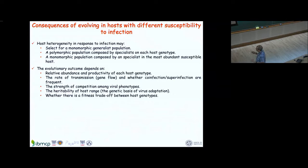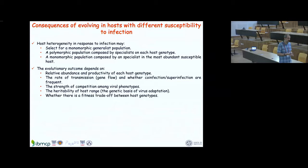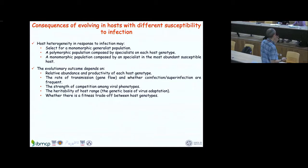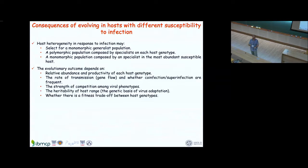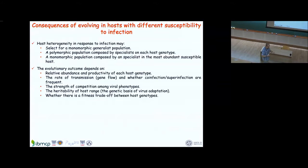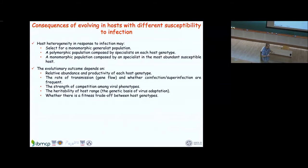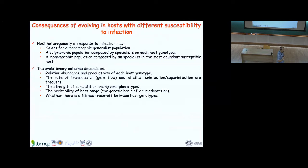The rate of transmission is also important — flu transmits easily by air or contact surfaces, while hepatitis C requires blood transmission via transfusions or shared syringes. Gene flow in the viral population and whether co-infection and super-infection are frequent also matter. Some viral genotypes may infect hosts already compromised by another viral genotype, and whether the virus produces single or multiple infections is relevant to the question.